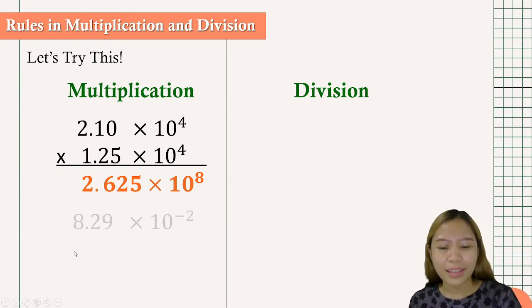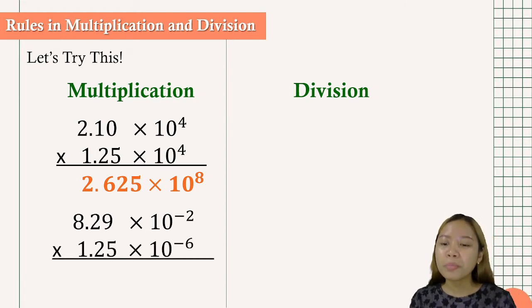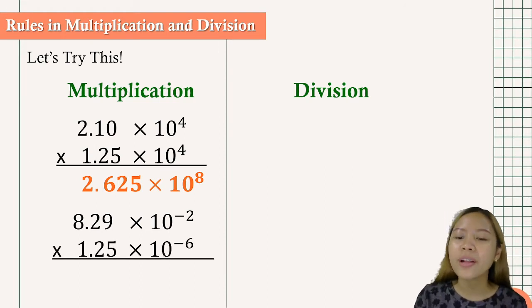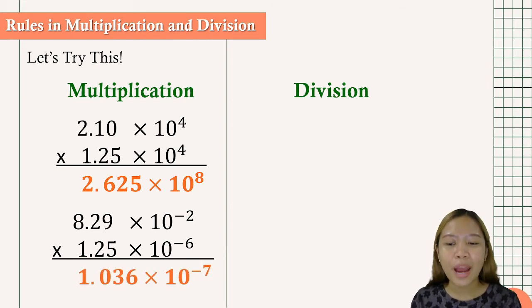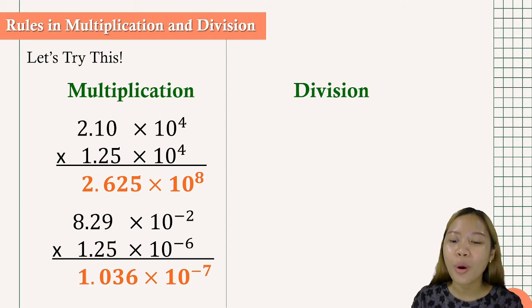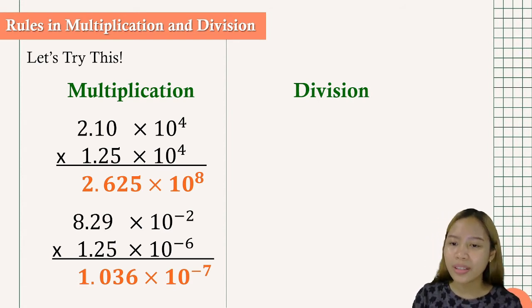Okay, next we have 8.29 times 10 to the negative 2 multiplied by 1.25 times 10 to the negative 6. So for our product, we have 1.036 times 10 to the negative 7.